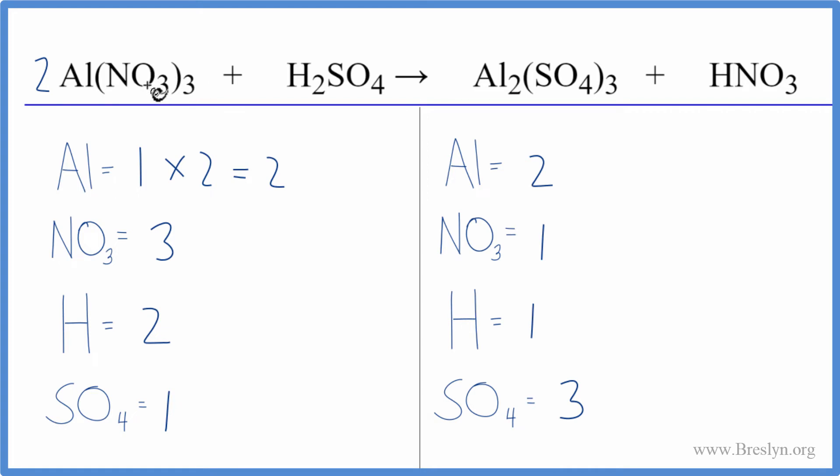And then three nitrates times two, that'll give us six nitrates. Let's balance the nitrates next. We could put a six in front of the nitric acid, the HNO3. Then we'd have one times six for the hydrogen - that'll give us six hydrogens. And then nitrates, we have the one here times the six - that'll give us six of those, so those are balanced.